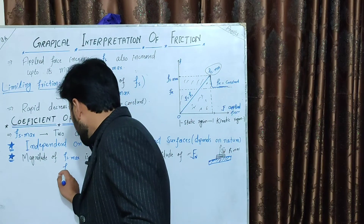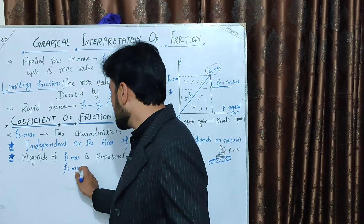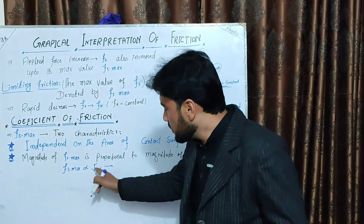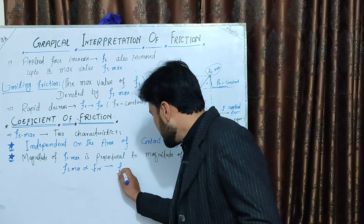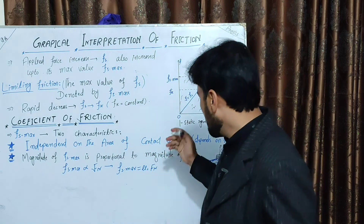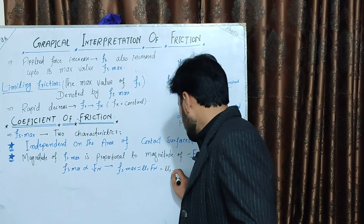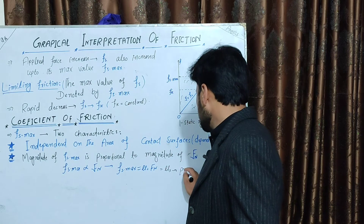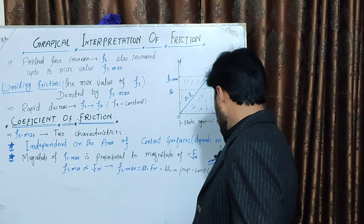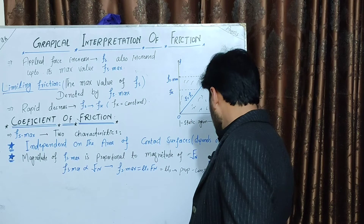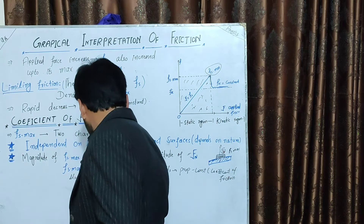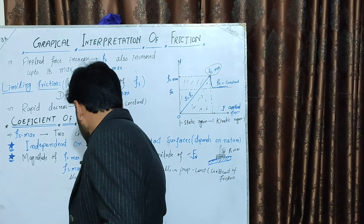We see that fs maximum value is proportional to fn. The proportionality gives us a constant. Therefore, fx maximum is equal to mu_s times fn. The proportionality constant mu_s is the coefficient of static friction. Rearranging the equation, mu_s equals fs divided by fn.